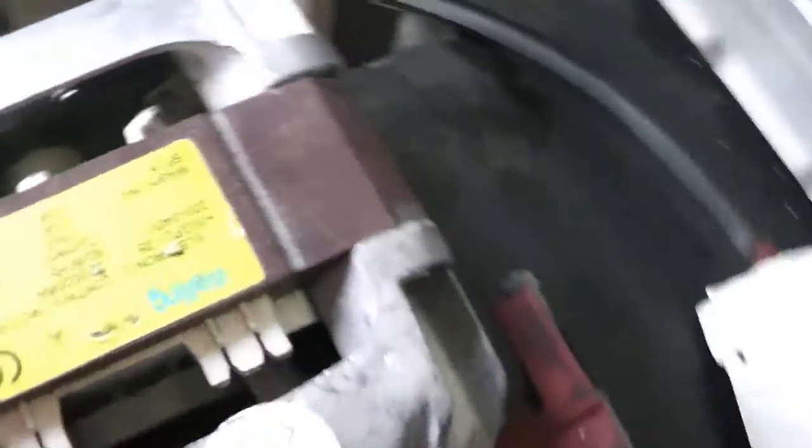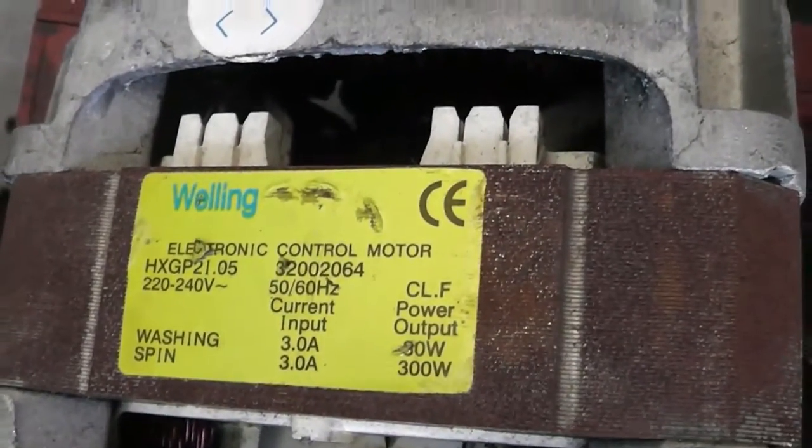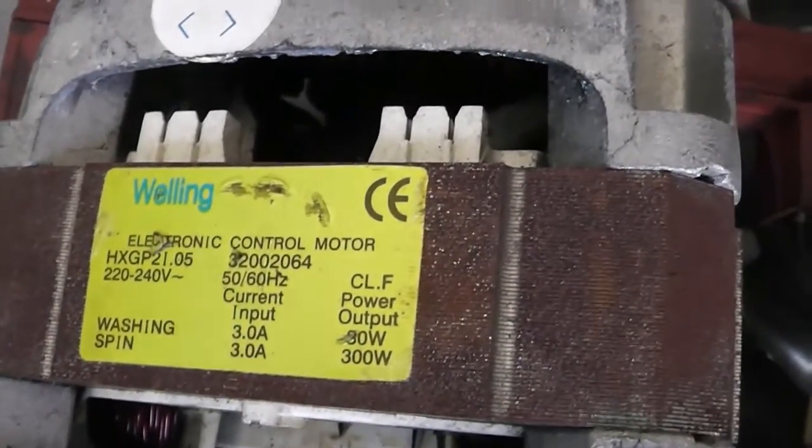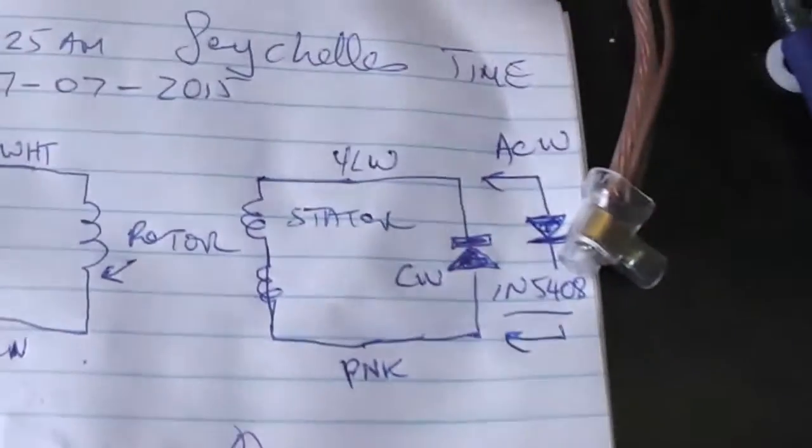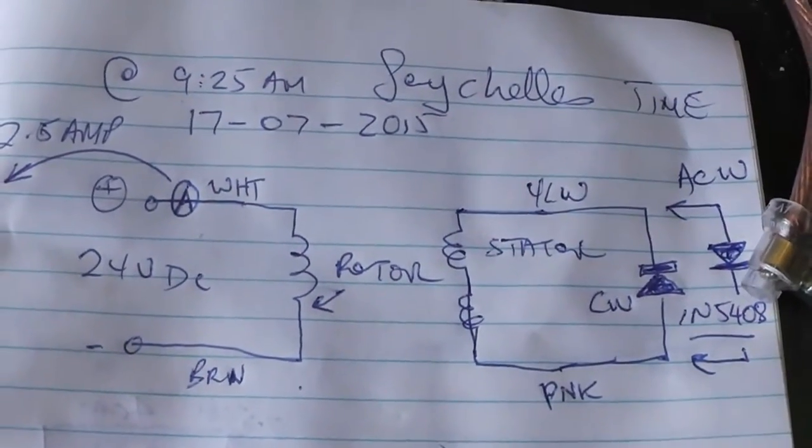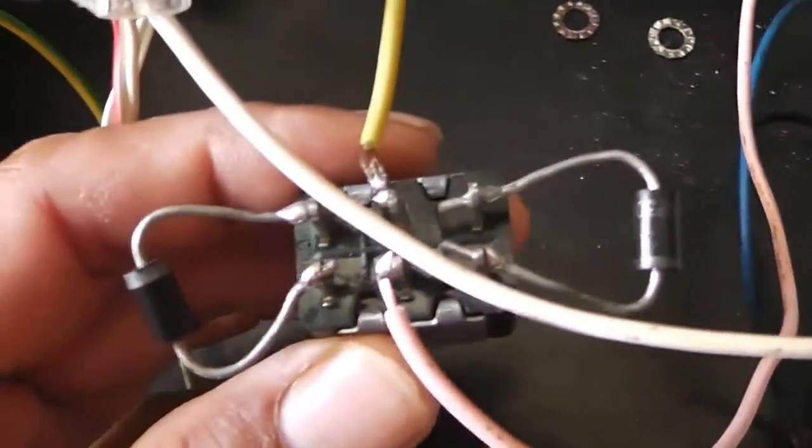As you can see here, this is the motor that I am using at the moment. I had to scrounge around and salvage this motor from the dump site. At the moment it's wired as such - these are diodes here, two diodes. One will go clockwise, one will go anti-clockwise.